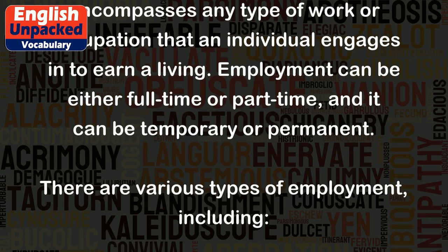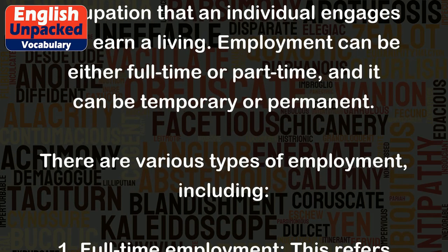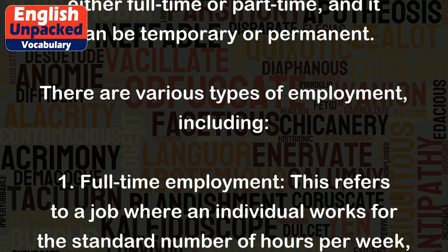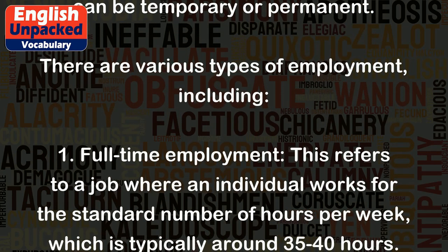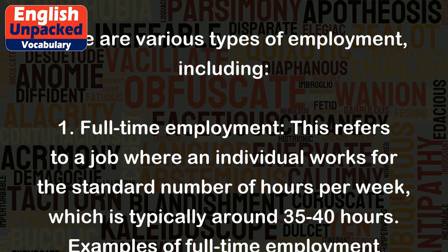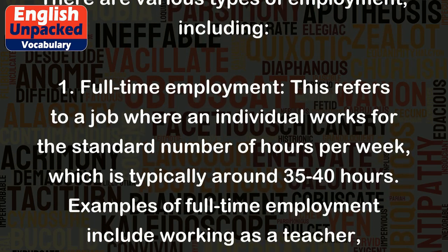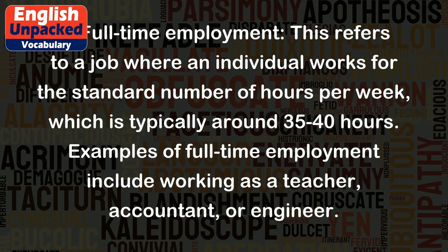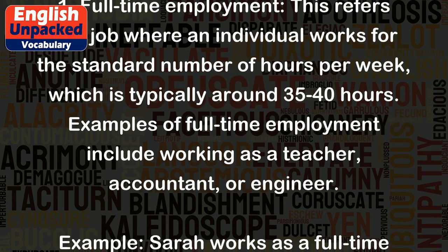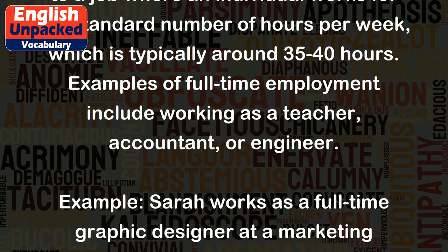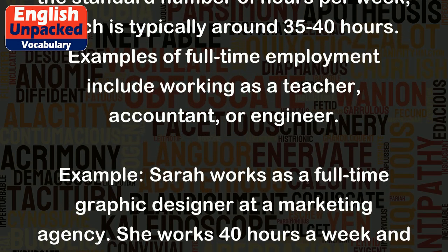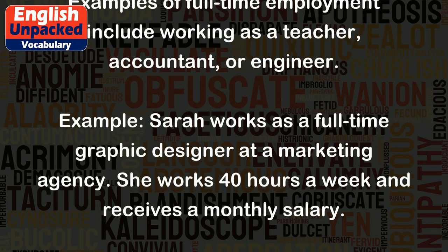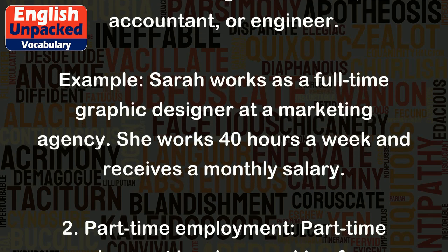There are various types of employment, including: 1. Full-time employment. This refers to a job where an individual works for the standard number of hours per week, which is typically around 35 to 40 hours. Examples include working as a teacher, accountant, or engineer. For example, Sarah works as a full-time graphic designer at a marketing agency. She works 40 hours a week and receives a monthly salary.